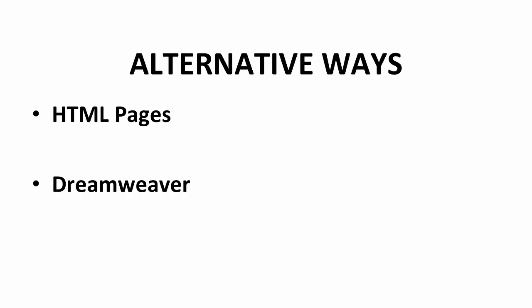There are another two alternative ways, which are HTML pages and Dreamweaver. HTML pages require knowledge in doing the scripting, while Dreamweaver is website builder software by Adobe. If you are keen for something different from WordPress, these are the other two alternative ways to set up your own site.